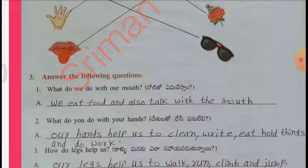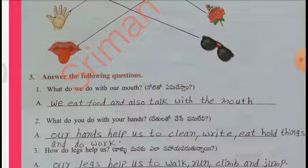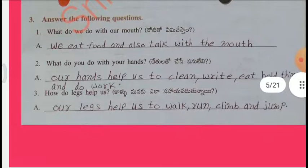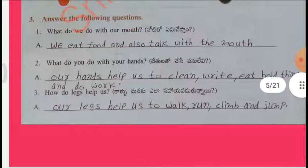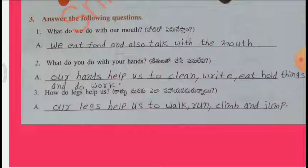Answer the following questions. What do we do with our mouth? We eat food and also talk with the mouth. What do you do with your hands? Our hands help us to clean, write, eat, hold things and do work. How do legs help us? Our legs help us to walk, run, climb and jump.